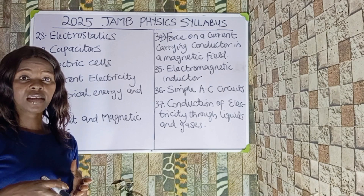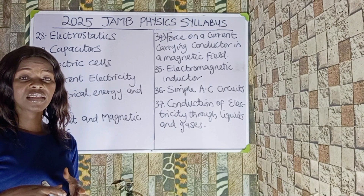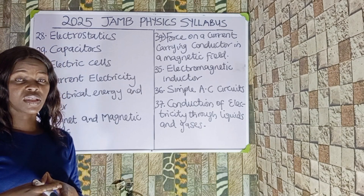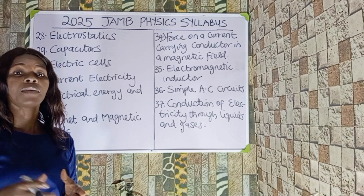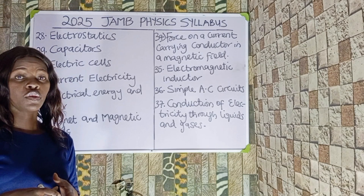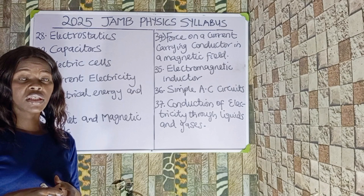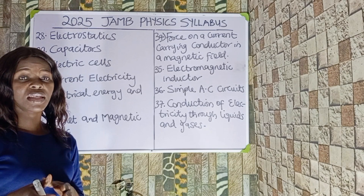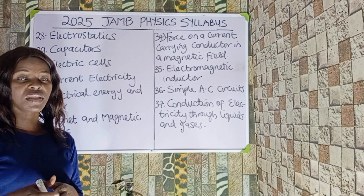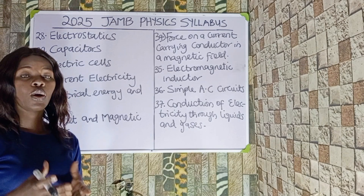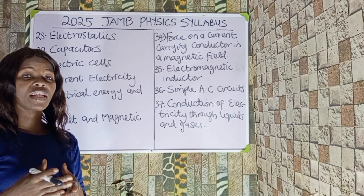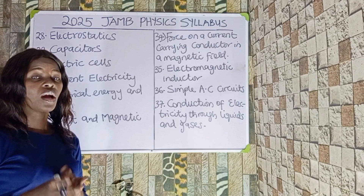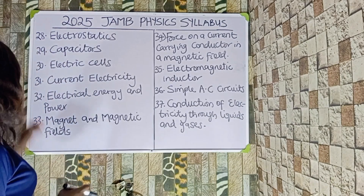Number thirty is current electricity. Under current electricity we should be looking at the resistance of a cell, internal resistance, current, lost voltage, terminal PD, resistivity and conductivity, potentiometer, Wheatstone bridge, meter bridge, how to convert a galvanometer to an ammeter, how to convert a galvanometer to a voltmeter, Ohm's Law, and factors affecting the electrical resistance of a wire.